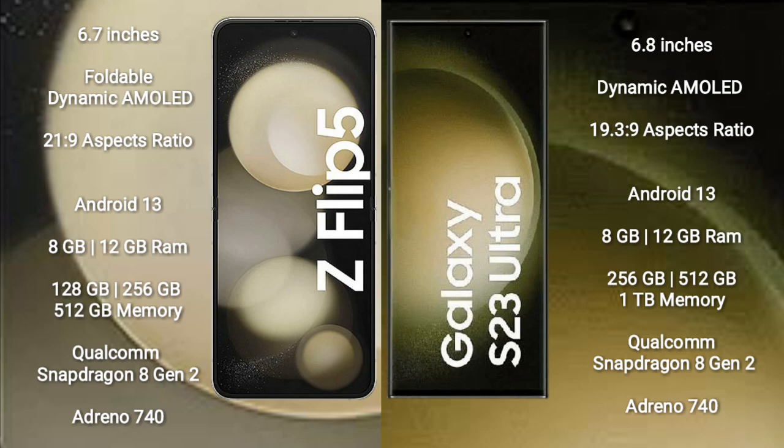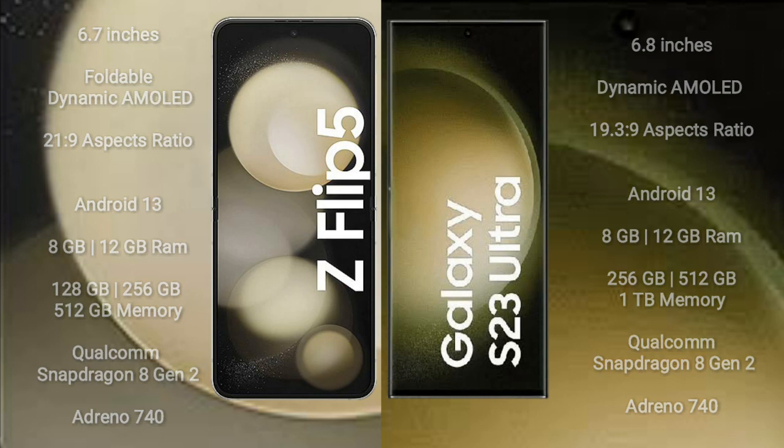The Samsung Galaxy S23 Ultra comes with 8GB or 12GB RAM, and 256GB, 512GB, or 1TB of internal storage. It is also powered by a Qualcomm Snapdragon 8 Gen 2 processor with Adreno 740 GPU.